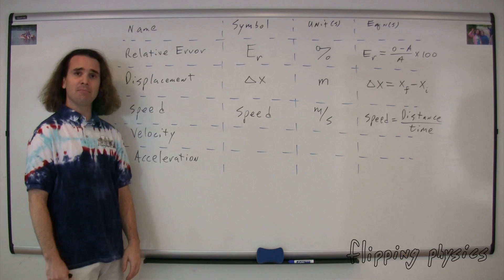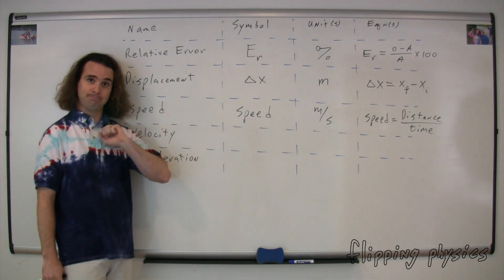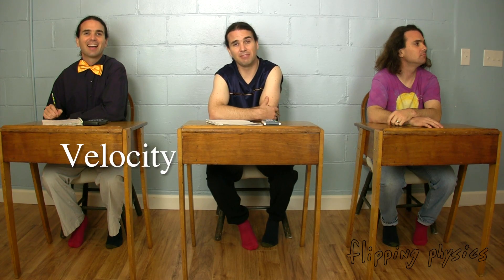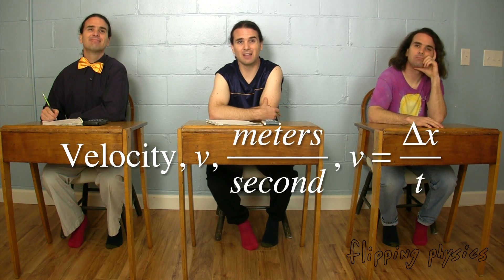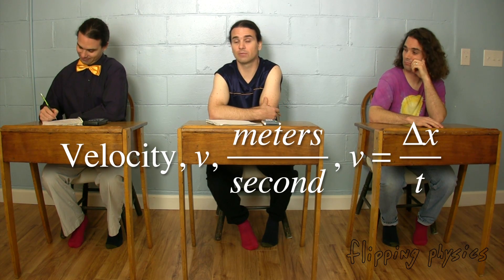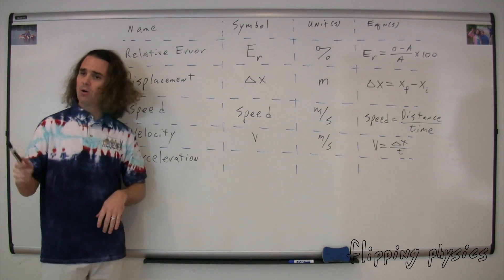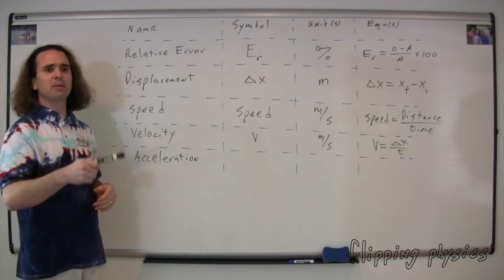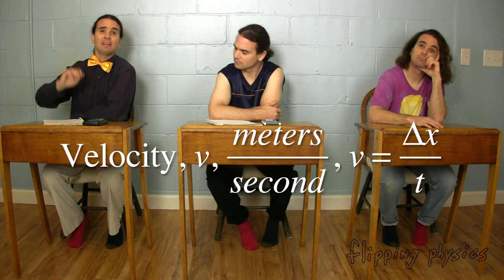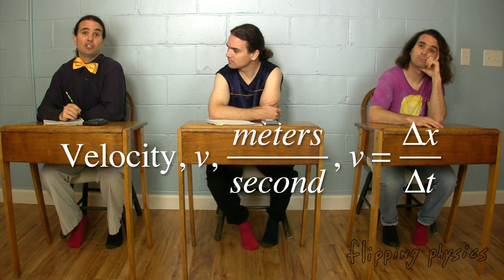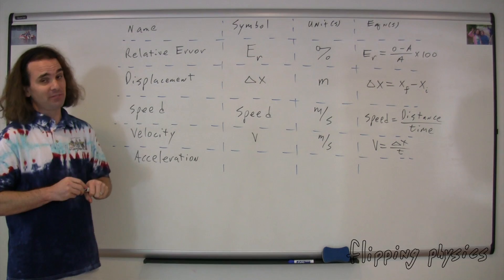Bobby, could you please give me the information for velocity? The symbol for velocity is v, it has the same dimensions as speed, meters per second, and velocity equals displacement over time. I think velocity equals displacement over change in time. Dang it. Very nice, Billy.